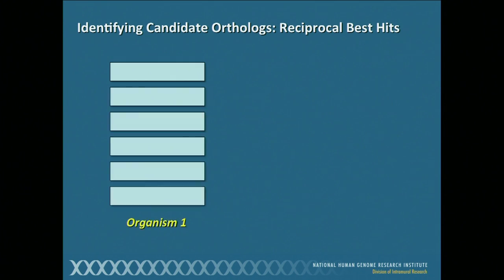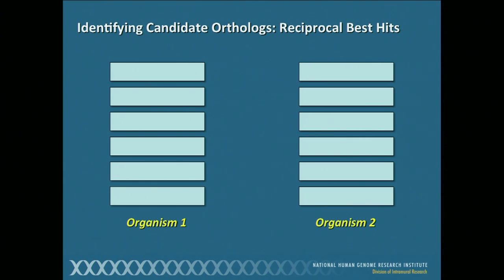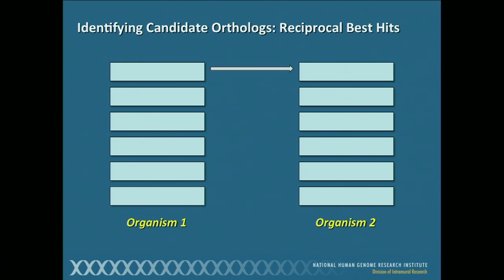Let's say we have a bunch of sequences from organism one and a bunch of sequences from organism two. What we're trying to do is find the genes in this genome that are most similar to themselves in this genome. We'll start with the first gene, do a similarity search, and it identifies a particular gene in organism two. You now do the reverse — you do the search using that particular sequence, and if it hits the same sequence in organism one, you can deduce that those two genes are orthologous because they both found each other in these reciprocal sequence searches.